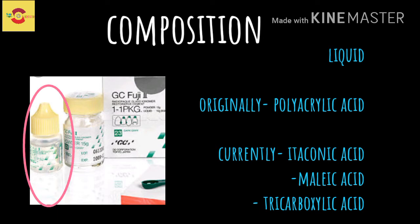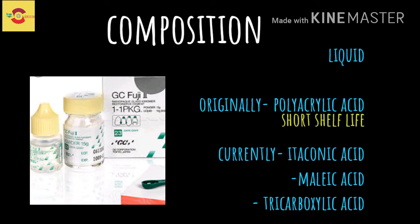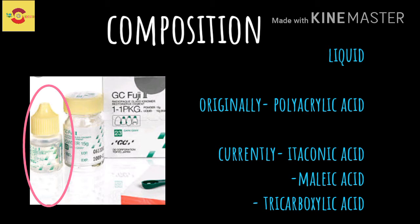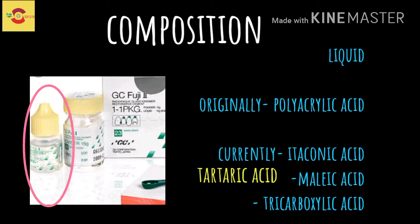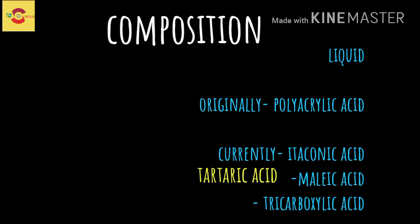The original polyacrylic acid liquid was about 40 to 50 percent, but such liquids were viscous and had a short shelf life because of the gelation property. Therefore, the current liquids used are co-polymers of itaconic acid, malic acid, or tricarboxylic acids. Tartaric acid is also known as the rate-controlling additive in GIC liquid.